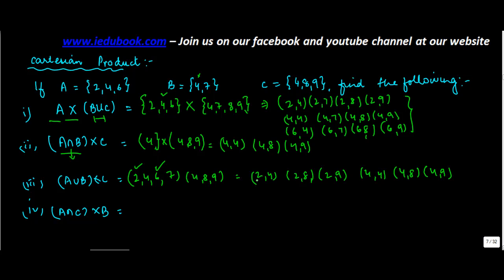Then you take 6. So 6 will be the first element and then make pair of 6 with each of these elements. 6 with 8, 6 with 9. And the last but not the least, 7. So 7 with 4, 7 with 8, 7 with 9.